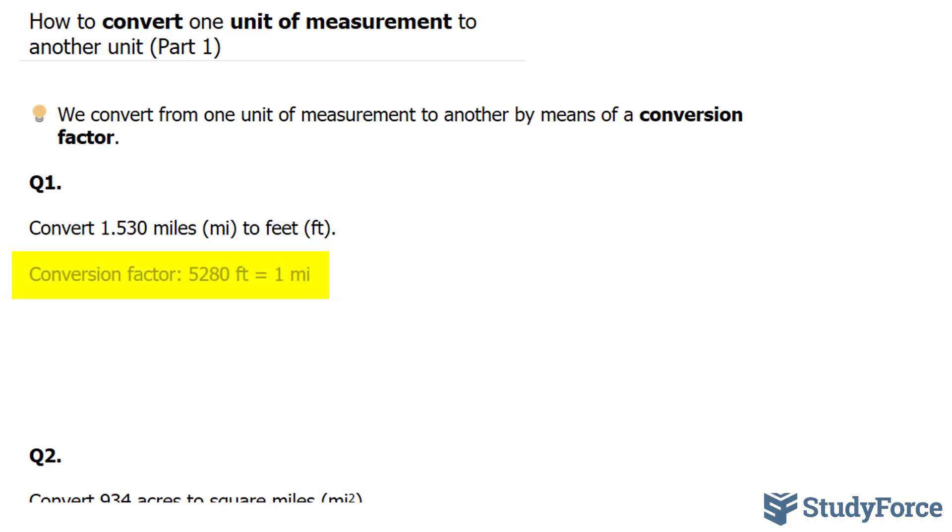Another word for conversion factor is conversion ratio. And every conversion factor, if it's shown like this, can be written in two other ways. Either, in this case, 1 mile over 5280 feet or 5280 feet over 1 mile. Essentially, these two are reciprocals.